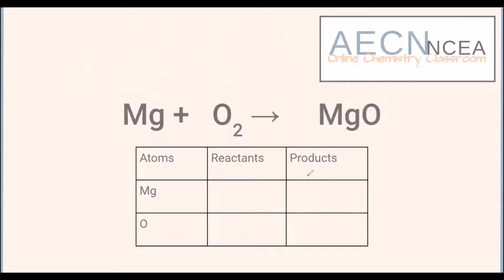In the table we have our reactants and our products, and then the atoms or ions involved in the reaction. You just count up what is on the reactant side and what is on the product side. Here we've got one magnesium — we know there is only one as there's no number in front of it — two oxygens, and then on the product side we've got one oxide.